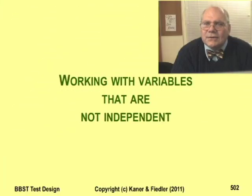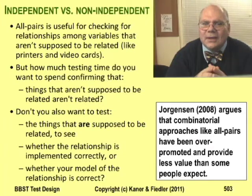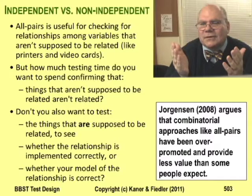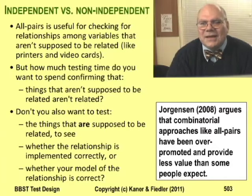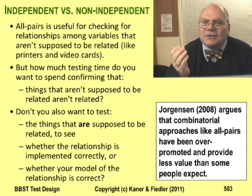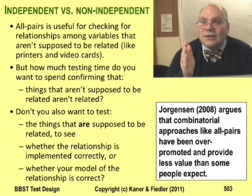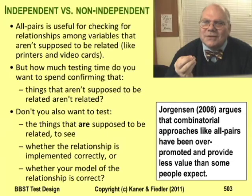Another challenge that basic combinatorial techniques have trouble with is non-independent variables. Throughout this class, I've assumed that all the variables under test are independent. In effect, what combination testing checks with independent variables is that variables that should be independent actually are. But in many cases, the variables aren't supposed to be independent. For example, if a bank's software is supposed to block you from withdrawing money you don't have, that's a business rule involving a combination of several variables. You might want to check that rule under a variety of circumstances, showing that related things are handled correctly and the relationship is spotted every time. That's combination testing too.